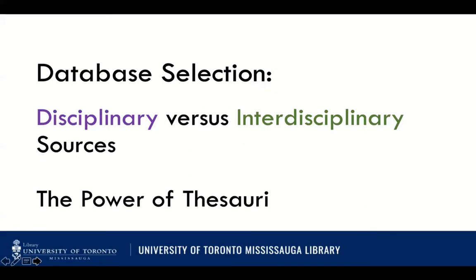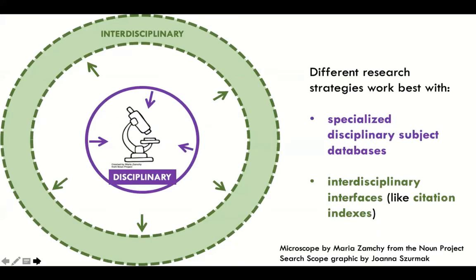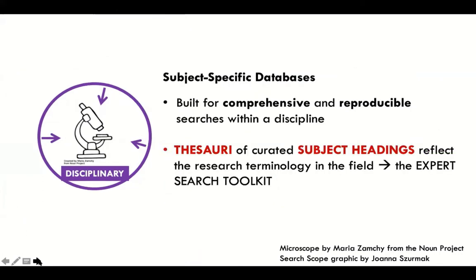This brings us to another really important point that the PRISMA search extension is going to ask you about: how many and what kinds of disciplinary databases — with thesauri versus citation indexes, or very often interdisciplinary sources — did you use? The disciplinary specialized databases are going to be Medline, PubMed, PsycInfo, whereas the interdisciplinary databases very often include Web of Science and Scopus, which are citation indexes that allow us to search and sort by number of citations — something we can rarely do in subject-specific databases.